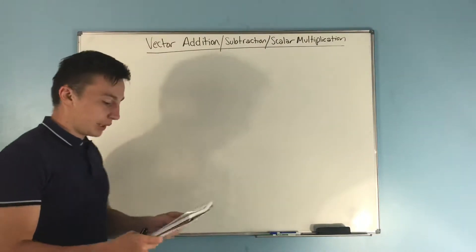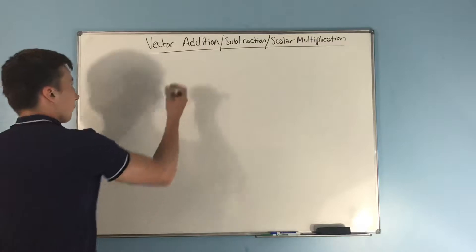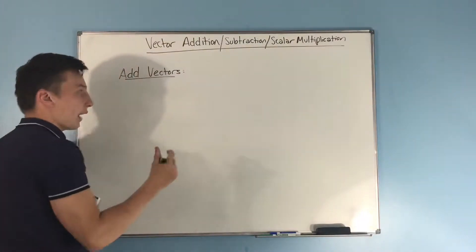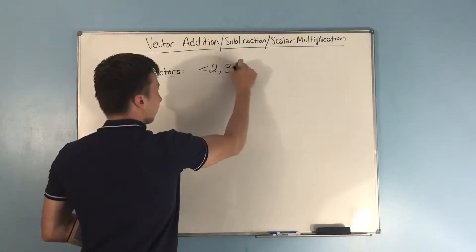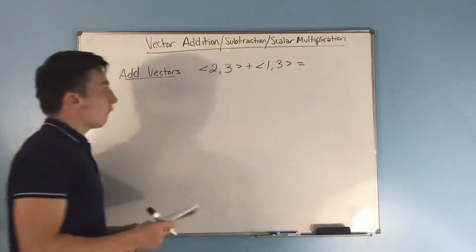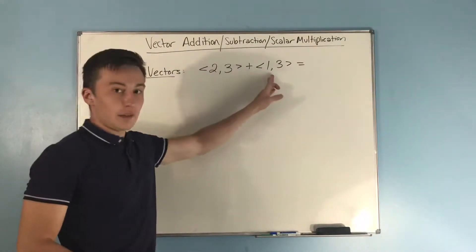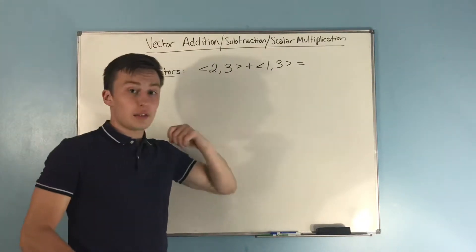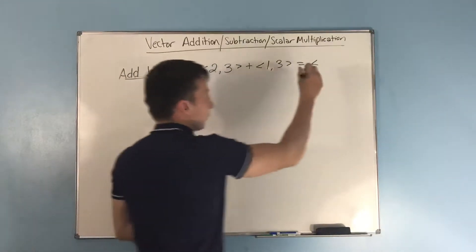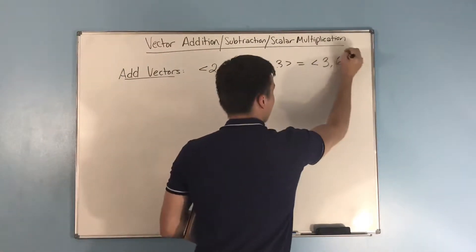Just as we can do operations on regular numbers — like adding, subtracting, multiplying, dividing — we can do the same thing with vectors. Let's go over adding vectors first. If we have one vector that's (2, 3) and another vector that is (1, 3), when we add them together, we add the x components and the y components — kind of like like terms. So two and one gives you three, and three and three gives you six. That is how you add vectors.